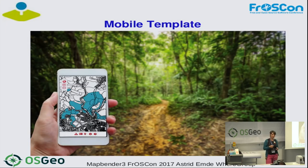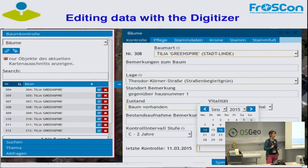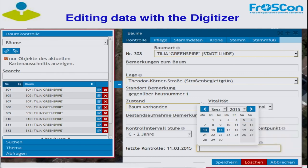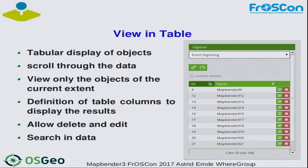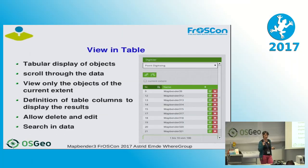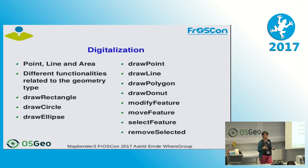MapBender can display in different designs. You can use the black design from the demo applications, but normally you would apply your corporate design by overriding the CSS styles that MapBender provides. There is also a mobile template available after installation. The digitizer allows you to edit and create data — for example, a tree cadastre which has a very complex form with detailed information for each tree point. The digitizer is configured via YAML, where you define the table structure and supported geometry types.